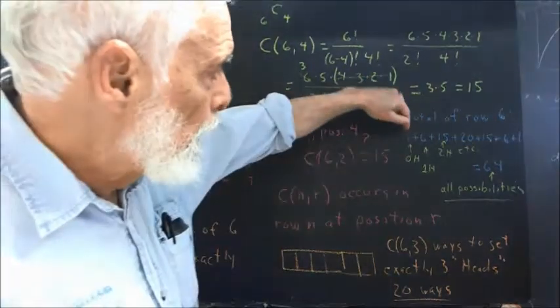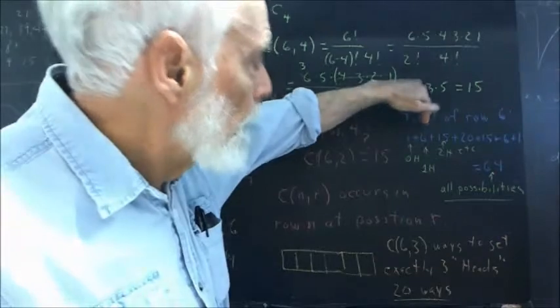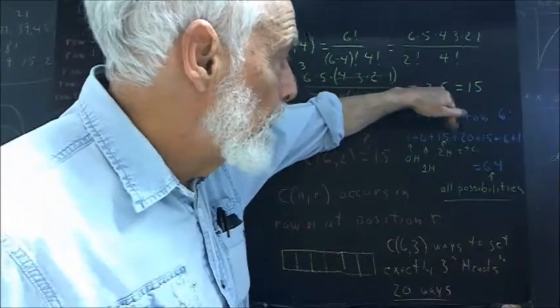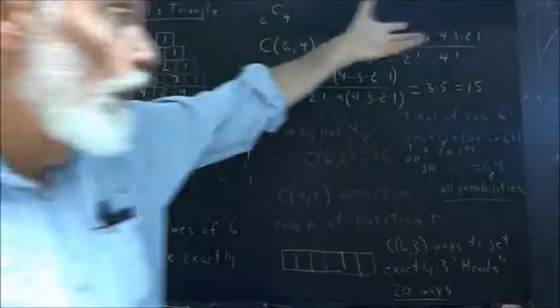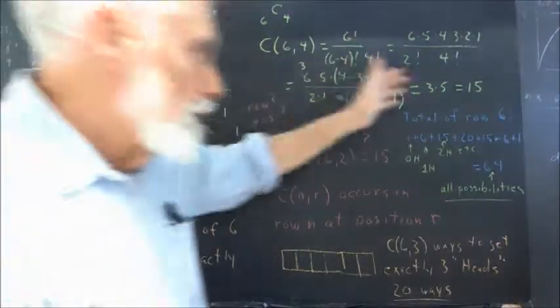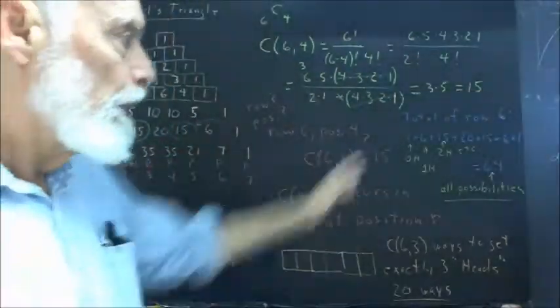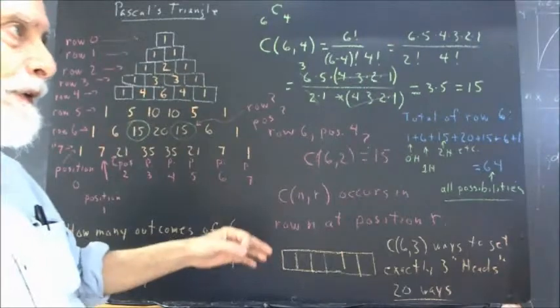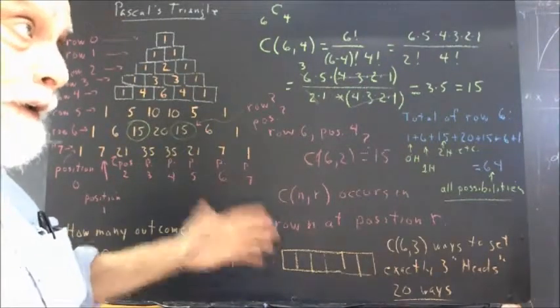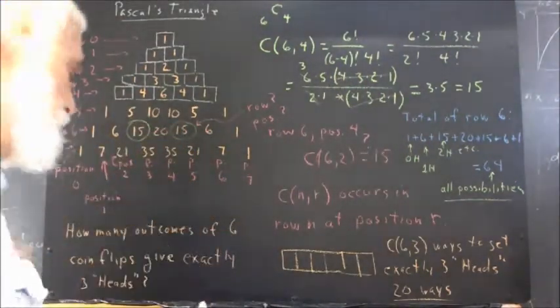Again, this represents the number of ways you can get zero heads, the number of ways you can get one, the number of ways you can get two, et cetera—the number of ways you can get three, four, five, six heads, and that's all you can do. You can get zero through six heads in this many ways, which means that there are 64 possibilities, 64 possible outcomes, equally likely outcomes, when you flip six coins.